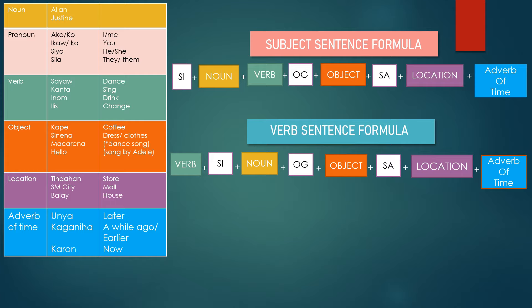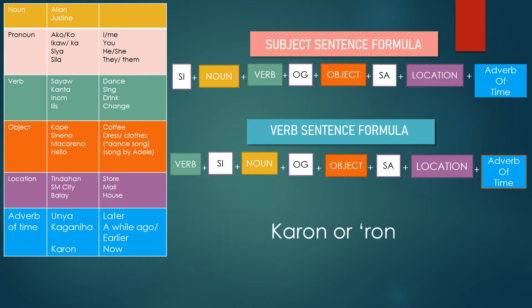Let's go to our table and go to the adverb of time row. We have here Unya, Kaganiha, and Karun. Unya means later. Kaganiha means a while ago or earlier. Karun means now.